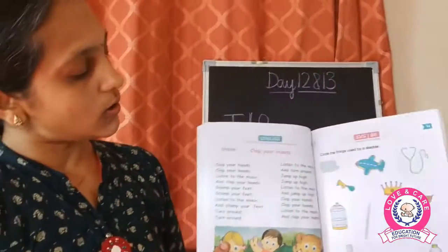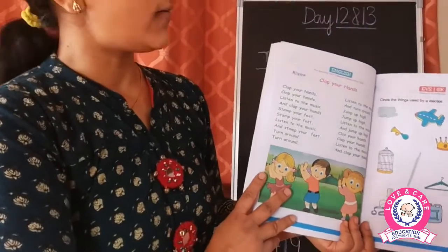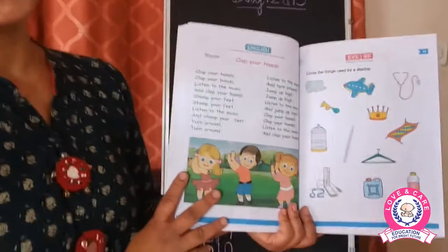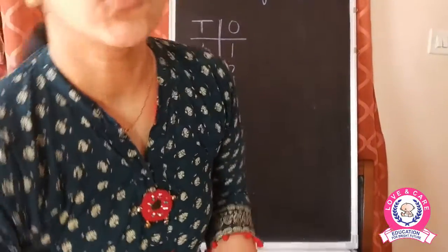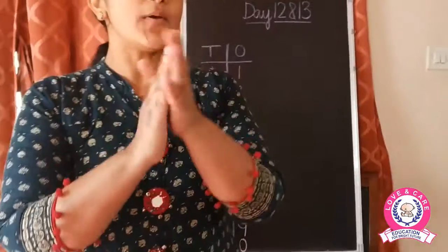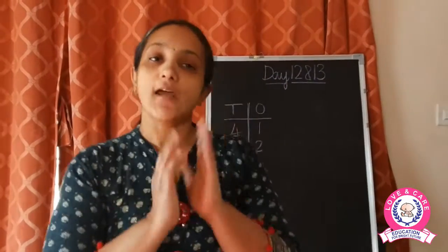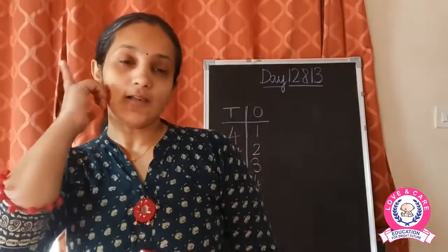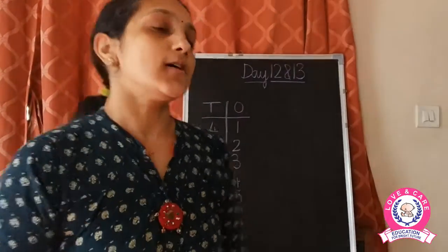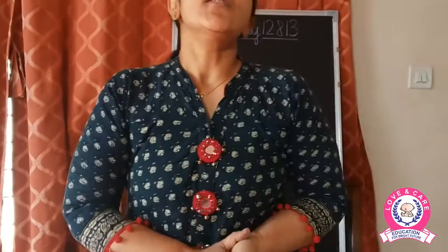Turning to the other page, we are going to learn a new rhyme. I believe it is a very exciting rhyme — it is full of action. It is called 'Clap Your Hands.' Are you all ready? Clap your hands, clap your hands, listen to the music and clap your hands. Stamp your feet, stamp your feet, listen to the music and stamp your feet. Turn around, turn around, listen to the music and turn around. Jump up high, jump up high, listen to the music and jump up high. Clap your hands, clap your hands, listen to the music and clap your hands. Isn't it an interesting rhyme, children?